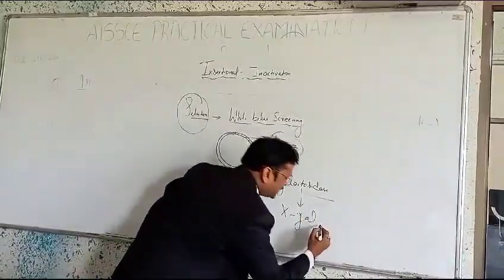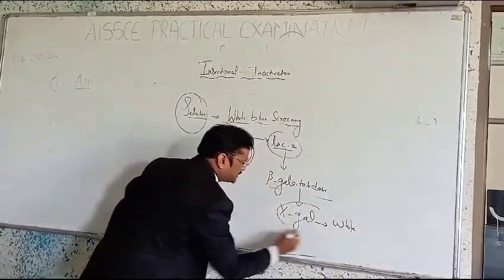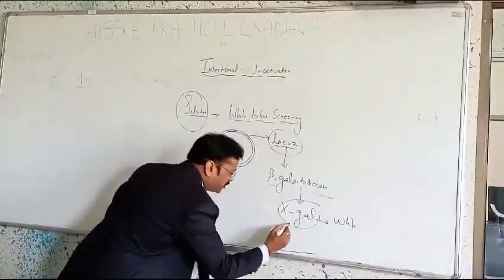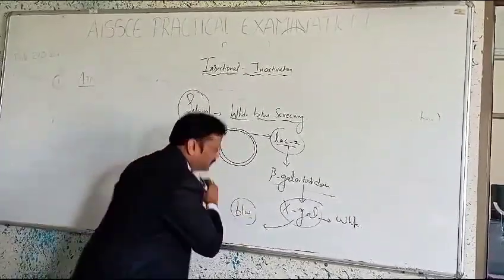X-gal, the usual color of X-gal is white. The moment beta-galactosidase breaks down the X-gal, it converts into a blue color residue. So that is white and blue over here.